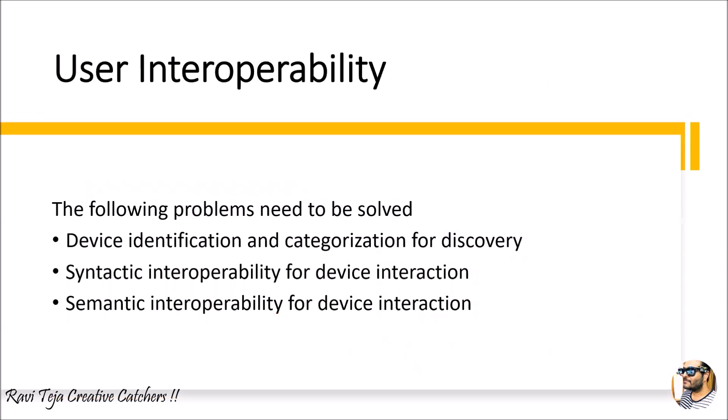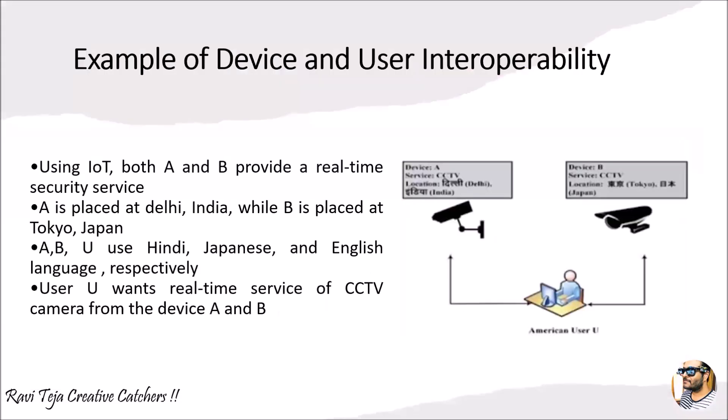Coming to user interoperability, the following problems need to be solved. First is device identification and categorizing for discovery. Once you start using hardware with respect to IoT, these devices need to be identified and categorized for safe communication and data exchange. The second is syntactic interoperability for device interaction, and the third is semantic interoperability for device interaction. We will now see what syntactic and semantic mean.